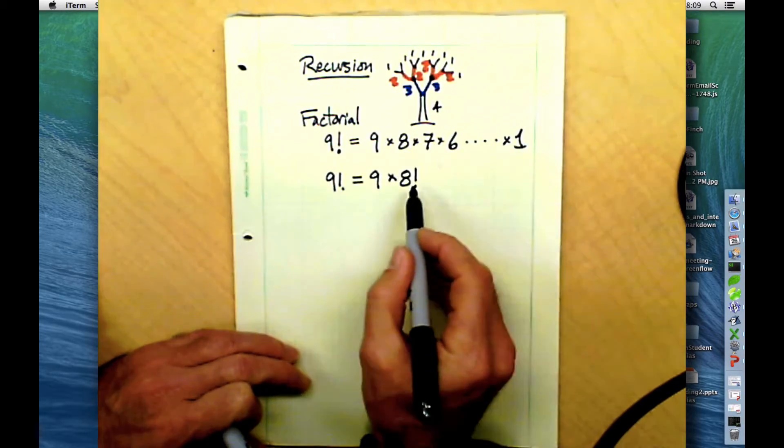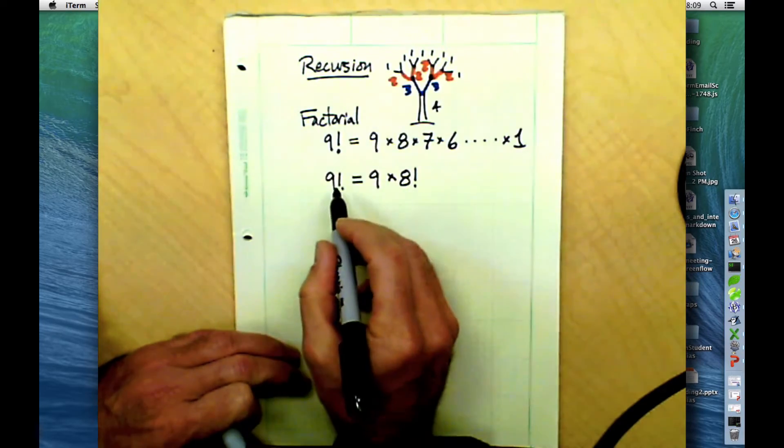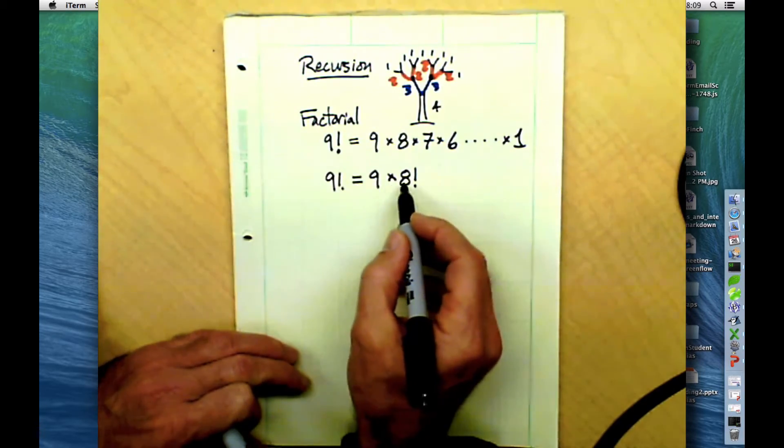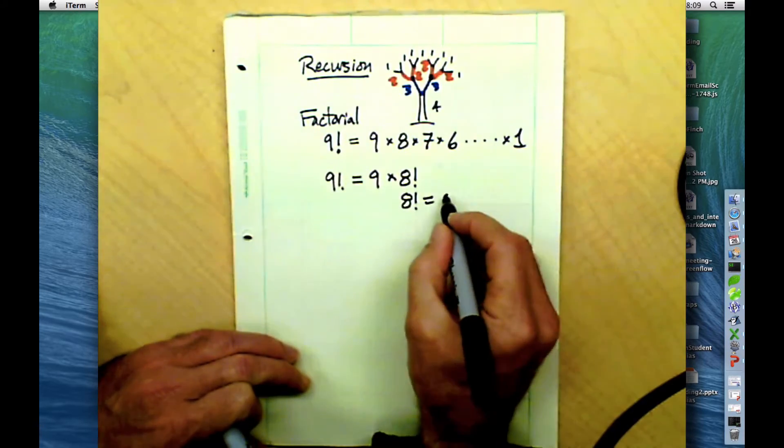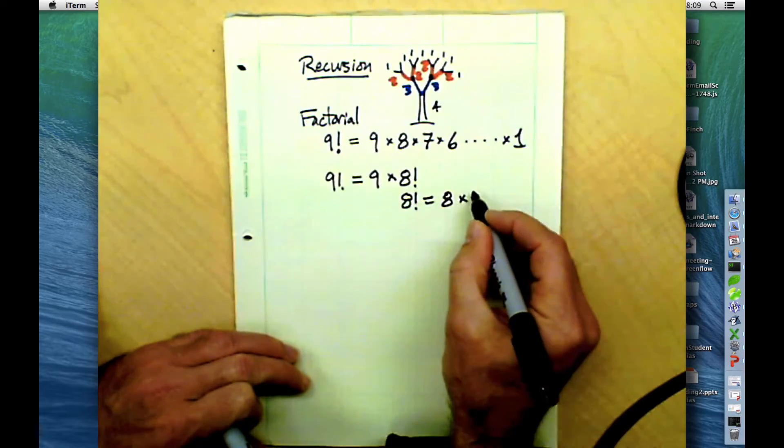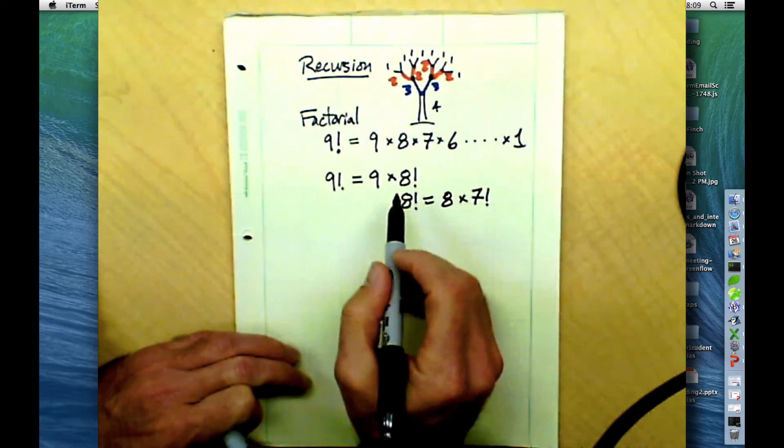It's nine times eight times all those things. Well, eight times all those things is eight factorial. So we can think about nine factorial as equal to nine times eight factorial. And of course, eight factorial is just equal to eight times all the things below it. That would be seven factorial. So this is a recursive definition.